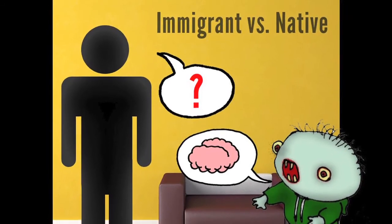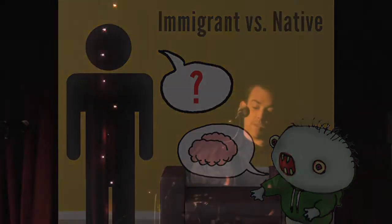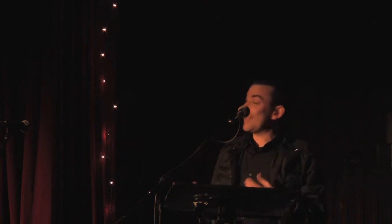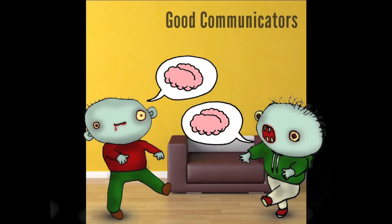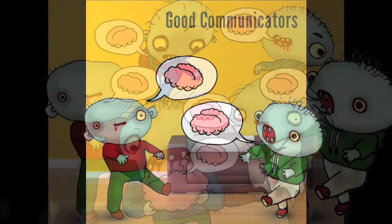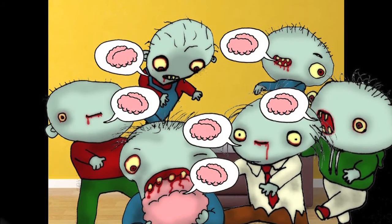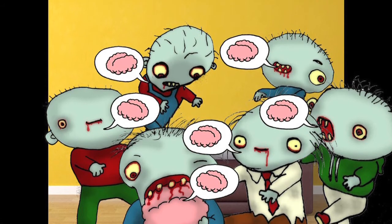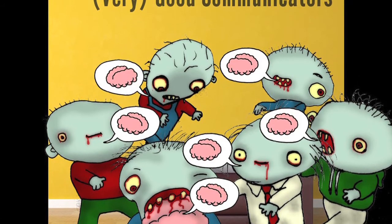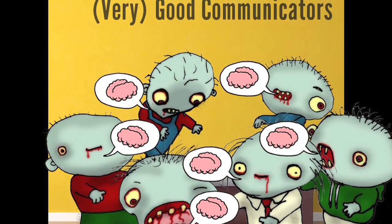One of the most transforming aspects of the digital revolution has been in communications. When designing for digital natives, we need to enable communication and social interaction. Digital natives are by their nature extremely good communicators. They talk to each other en masse regardless of what activities they're currently engaged in, so you can either facilitate that in the design of your products, or they'll find a way of doing it despite you.